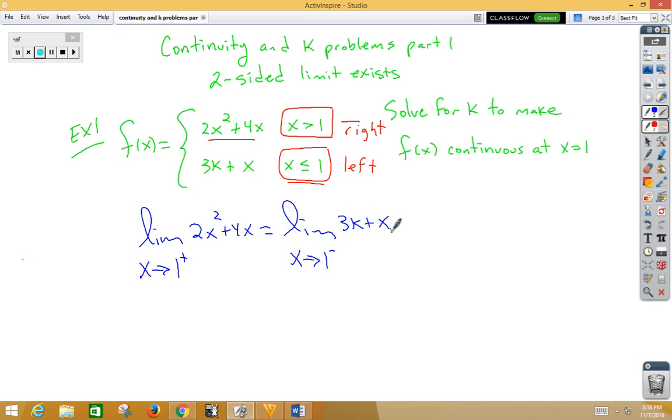So we set the right side limit and the left side limit equal to each other. That way, the two-sided limit will exist. Remember, the first thing we always try with limits is plugging in.